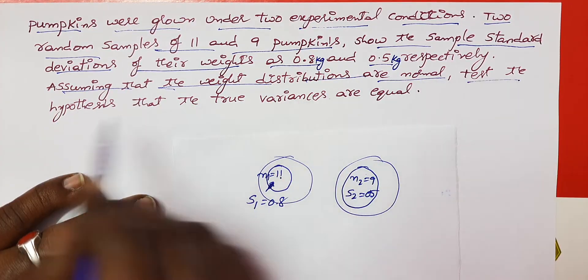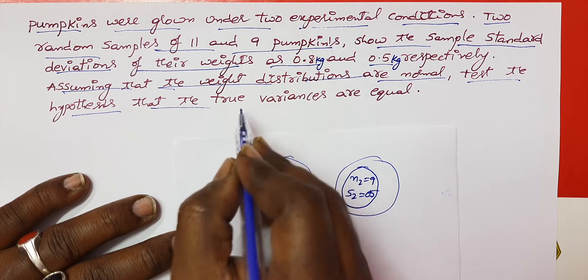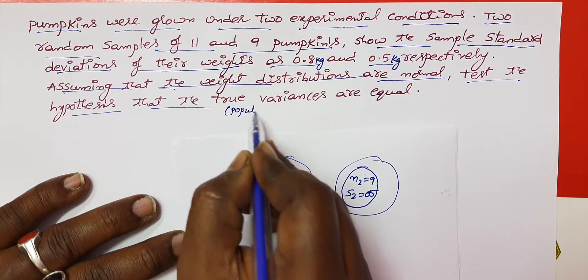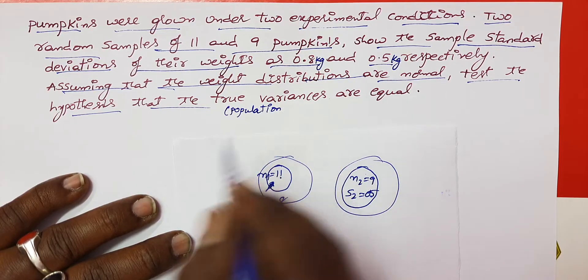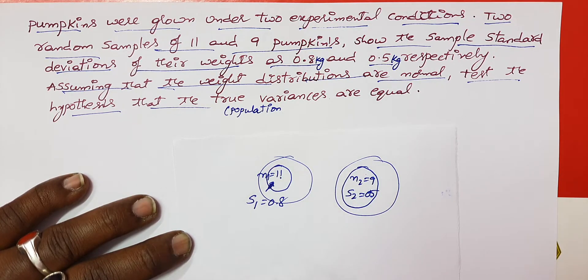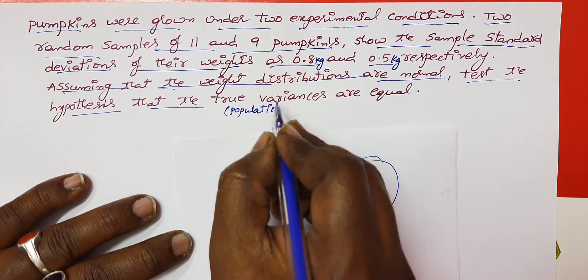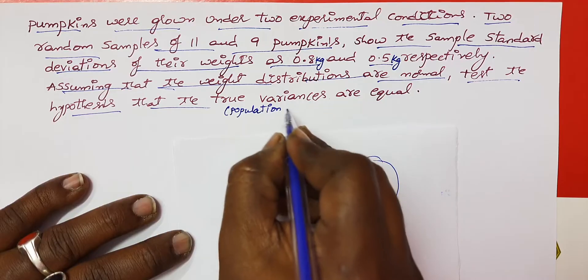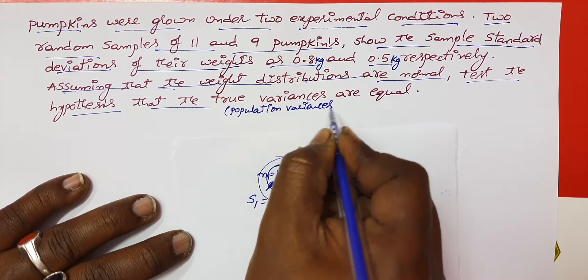Test the hypothesis that the true variances are equal. Note that the population mean is called true mean, and the population variance is called true variance — so true variance and population variance mean the same thing. Don't get confused during the exam.